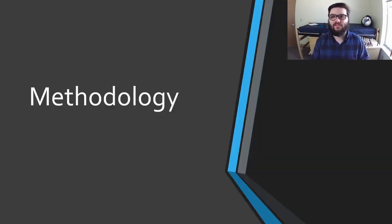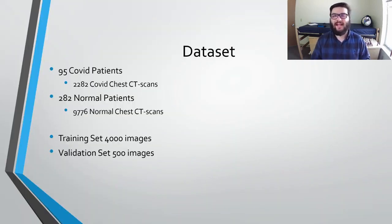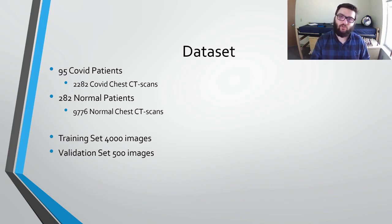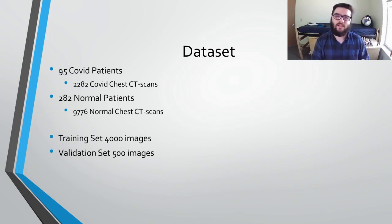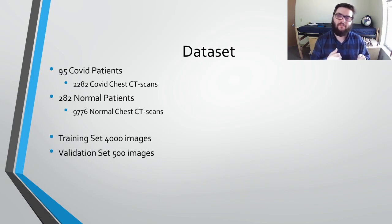Now let's go over the overall methodology and how we built and trained our own model. As with any supervised learning algorithm, the first step is to find a good labeled dataset. We found one that consisted of 2,282 COVID chest CT scan images and 9,776 normal chest CT scan images. We then split those images into two subsets. The first is the training set, used for the model to train its weights — whenever an error occurs, it's backpropagated through the network. This consisted of 4,000 images with a 50-50 split between normal and COVID. We also made a validation set of 500 images with the same 50-50 split, but errors in the validation set were not backpropagated — it was used solely to track overall accuracy after each pass through the training set.